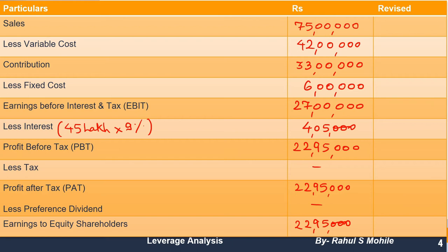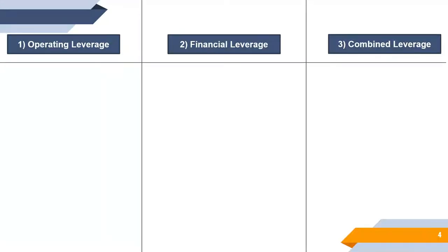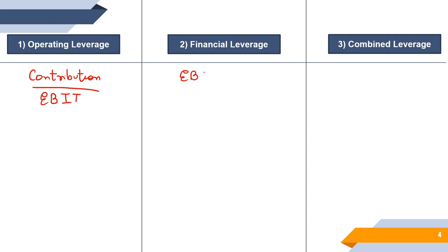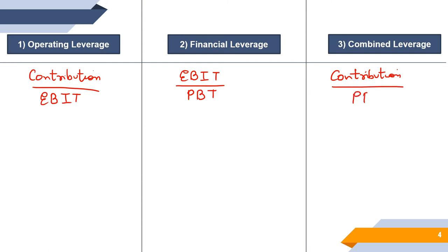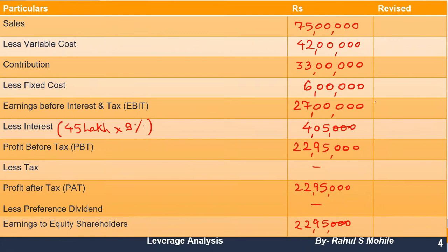Now let us calculate the three leverages first, then we will solve the remaining parts. The formula for operating leverage is: contribution divided by EBIT. The formula for financial leverage is: EBIT divided by PBT, that is earnings before interest and tax divided by profit before tax. The formula for combined leverage is: contribution divided by PBT.